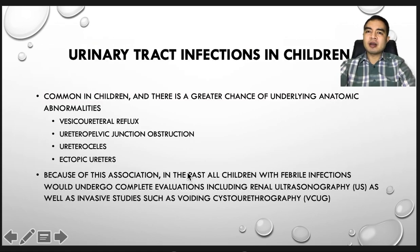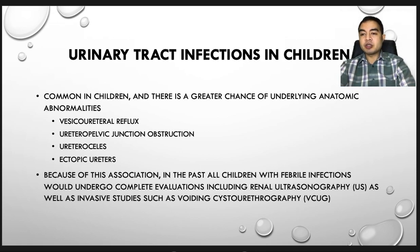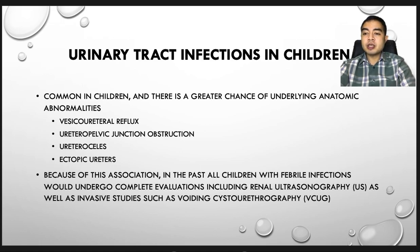The second common pediatric urology case you will encounter is urinary tract infections in children, and there is a greater chance of underlying abnormalities for these patients. Children may have conditions such as VUR — vesicoureteral reflux — ureteropelvic junction obstruction, ureteroceles, or ectopic ureters as causes of these infections.